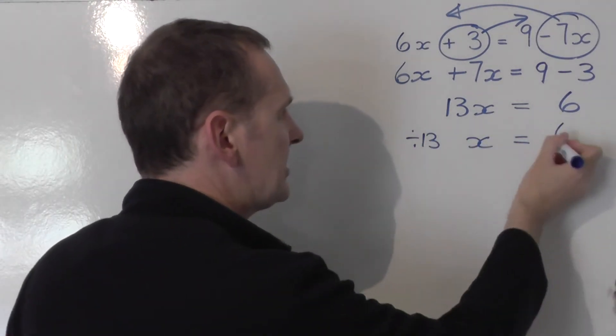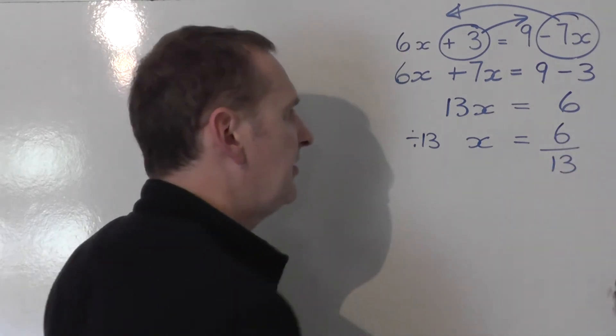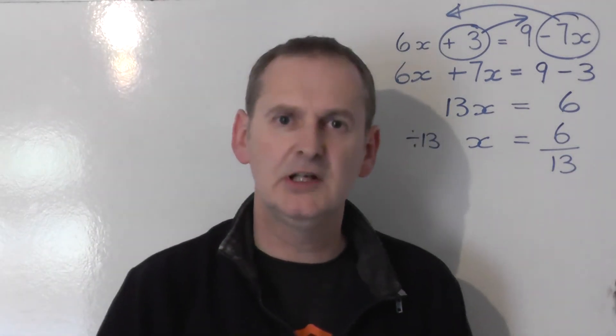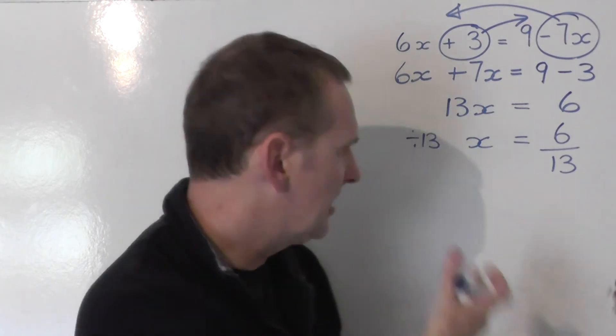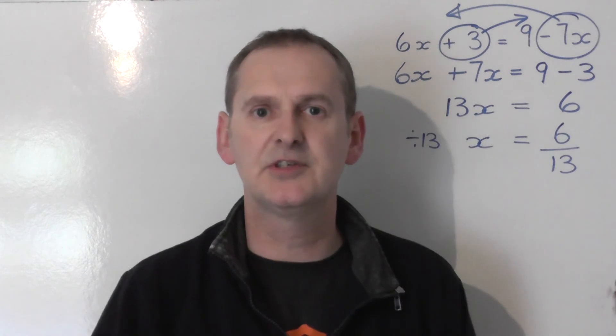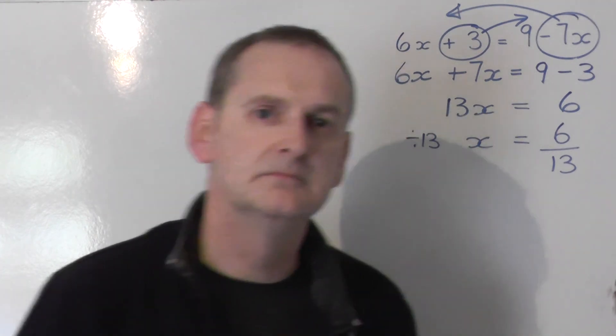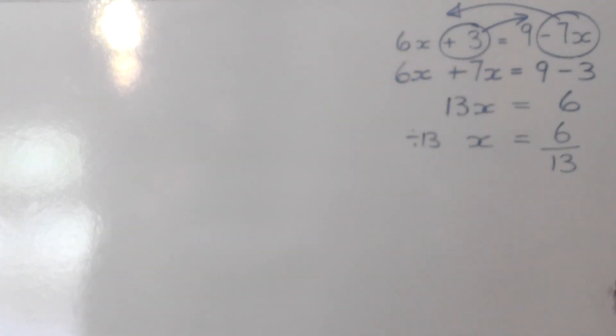So what I'm going to do is share this by 13 on the left to get a single x. So to keep it balanced, I take the 6 and I share that by 13 as well. 6 share by 13 is a really awkward decimal. Don't even reach for a calculator. The answer is x equals 6 thirteenths. That's the end of this video.